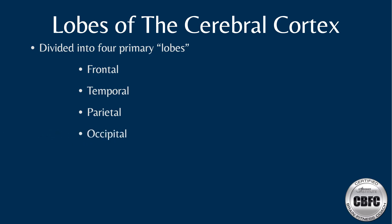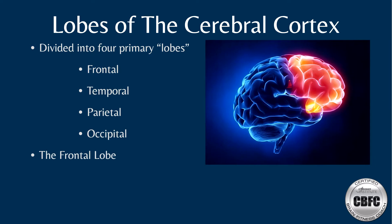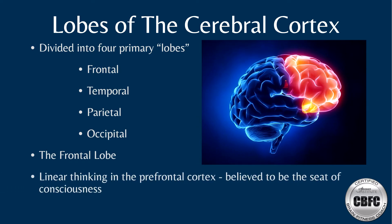The main function of the frontal lobe is linear thinking. Another name for it is the prefrontal cortex. Scientists believe that the seat of consciousness is located in the frontal lobe, and it is believed to be involved in personality, emotions, intelligence, attention and concentration, judgment, body movements, and problem solving.